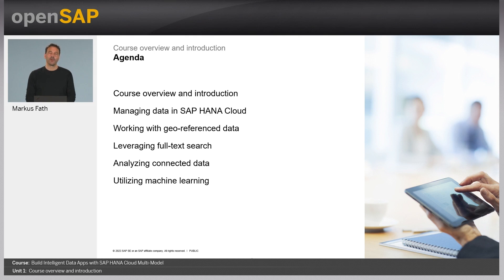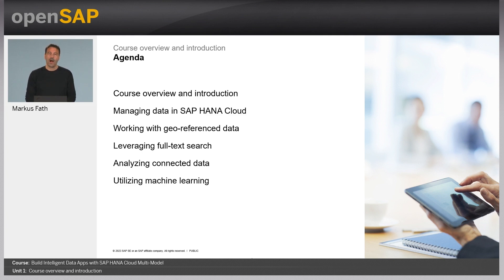Here's what we are going to cover. After this brief introduction, we will talk about how to manage data in SAP HANA Cloud, and specifically we will look at managing JSON data in the document store. Then we will look at geo-referenced data — that is spatial data — and ways to analyze it. After that, we will introduce full-text search capabilities of SAP HANA Cloud and give you an idea of how you can build search-based applications.